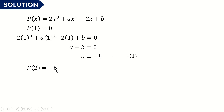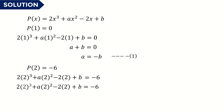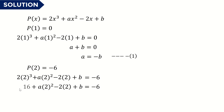Now for the second equation using p(2) = -6. We substitute x = 2 into the polynomial, and this should equal -6. Simplifying: 2 to the power of 3 is 8, so 2 times 8 is 16; 2 to the power of 2 is 4, so we get 4a.